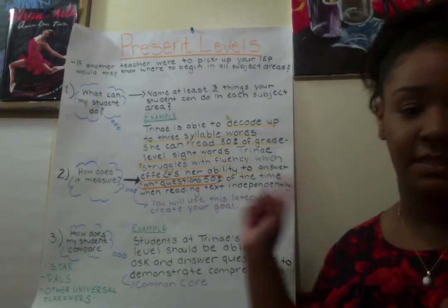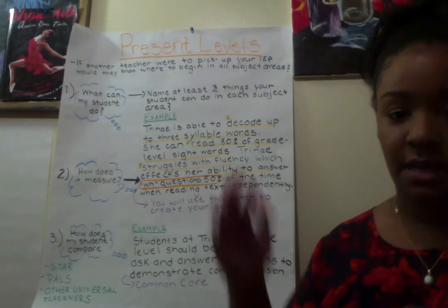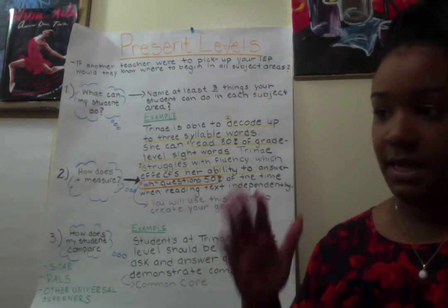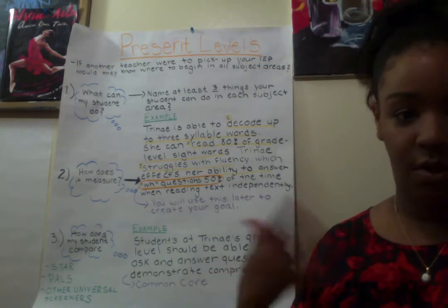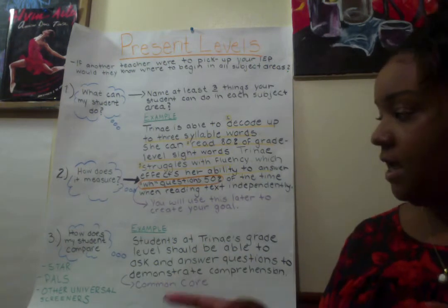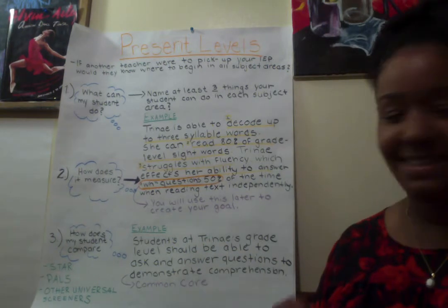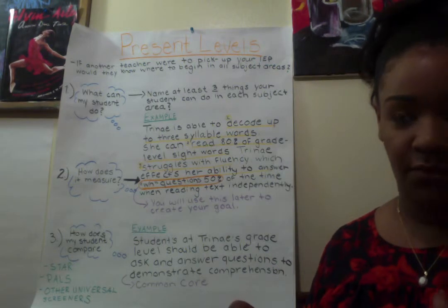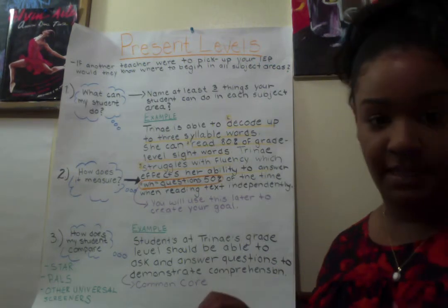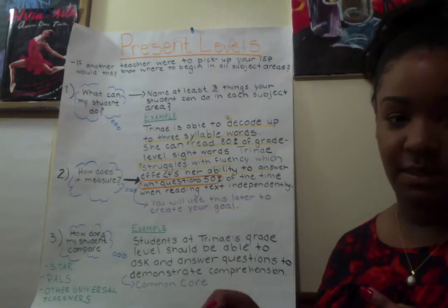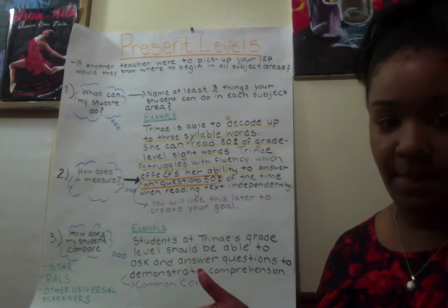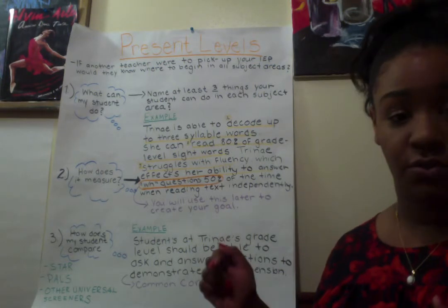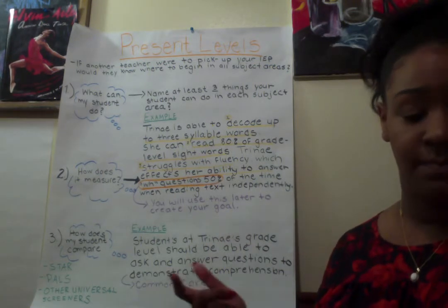The heart of the IEP is the present level of functional performance. Everything else with the new forms up to this point is the same as what you're used to doing. This part is where it gets slightly different from what we're accustomed to, because it's going to fuel the disability related needs, the effects of disability — which we'll continue to call the impact statement for fidelity purposes — and it also fuels the writing of the goals.